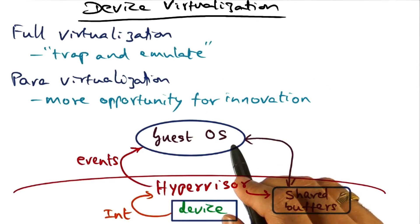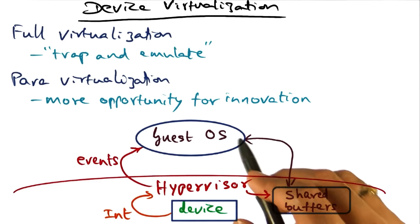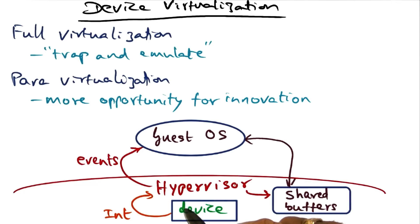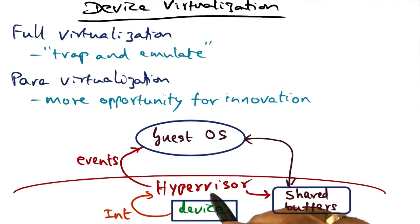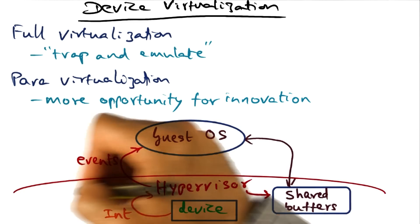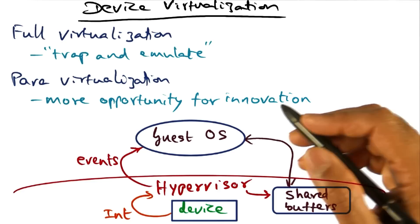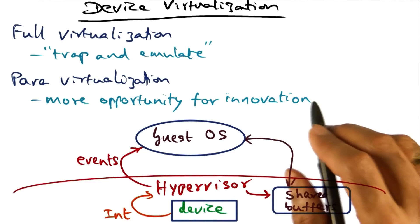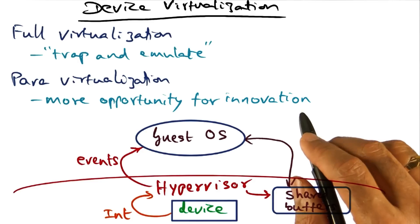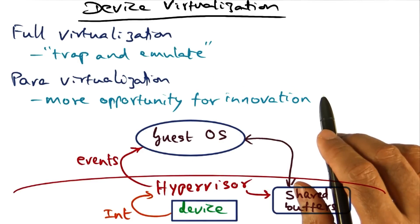In order to do device virtualization, we have to worry about two things. One is how to transfer control back and forth between the hypervisor and the guest, because devices being hardware entities need manipulation by the hypervisor in a privileged state. The other is data transfer, since the hypervisor is in a different protection domain compared to the guest operating system. We'll see how both control transfer and data transfer are accomplished in both the fully virtualized and the para-virtualized settings.